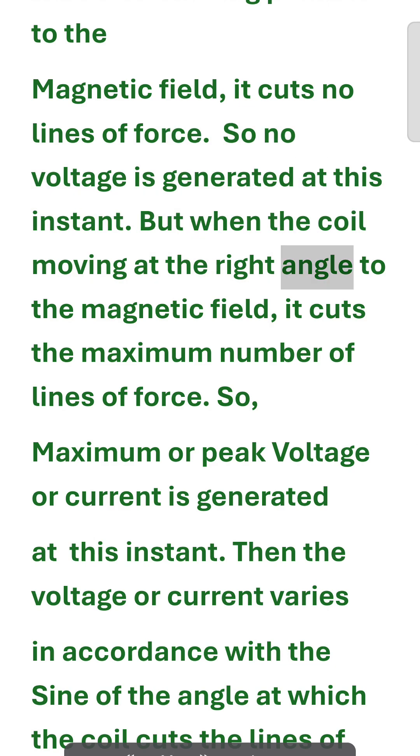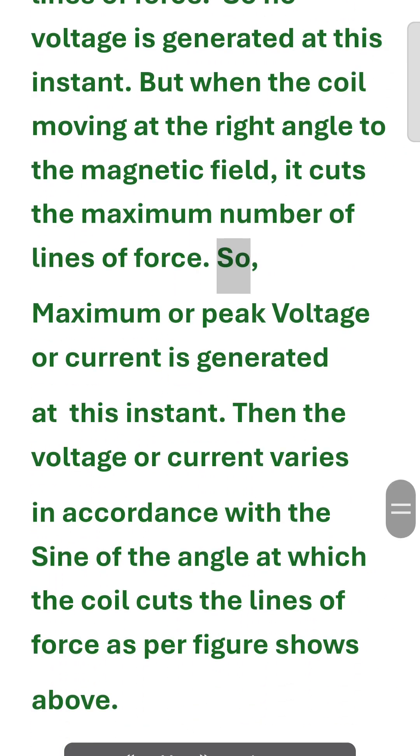But when the coil is moving at the right angle to the magnetic field, it cuts the maximum number of lines of force. So, maximum or peak voltage or current is generated at this instant.